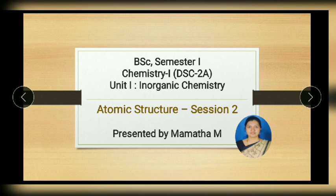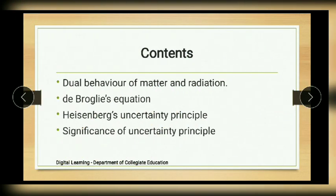Hello dear students, I welcome you to the second session of atomic structure. In the previous session we learned about Bohr's atomic theory and its limitations. In this session we are going to study about dual behavior of matter and radiation, de Broglie's equation, Heisenberg's uncertainty principle and its significance.